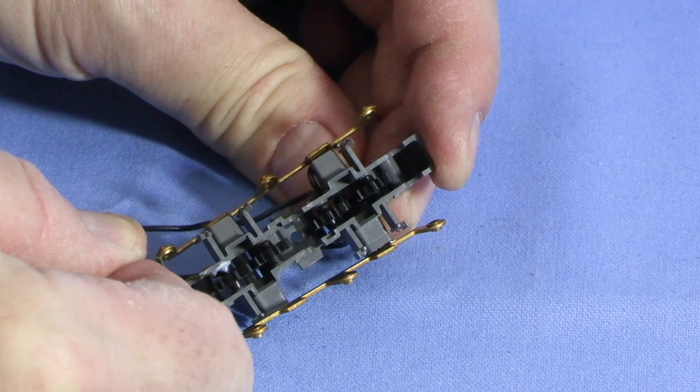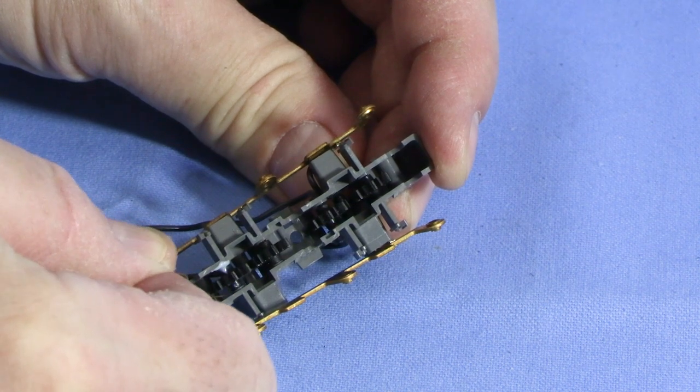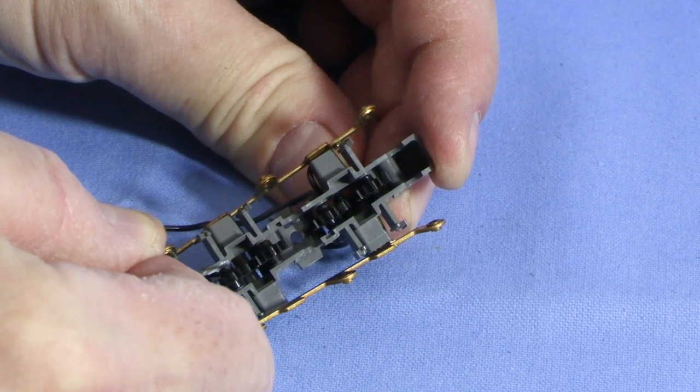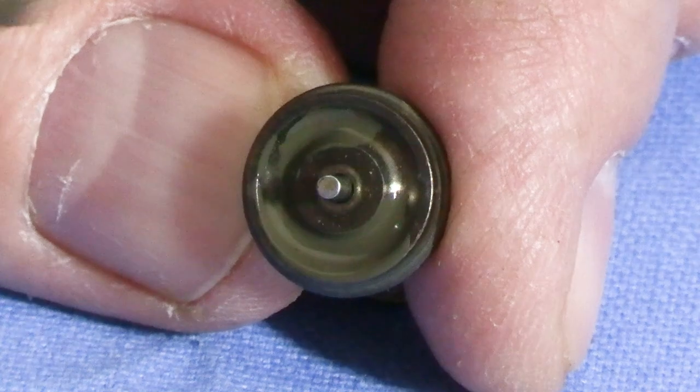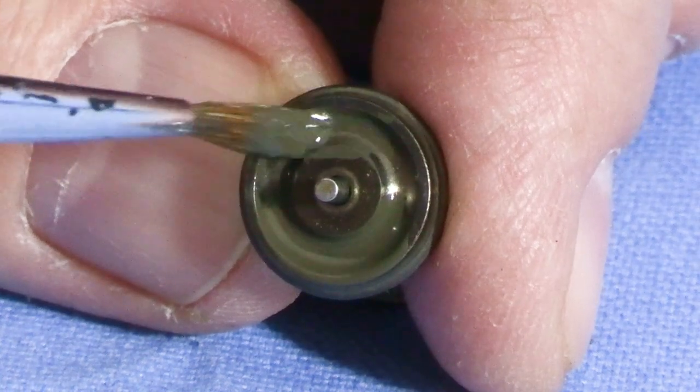Since the second gearbox also looks clean, I'm going to leave it together and lubricate it in a different way. I'm using a piece of wire to put small dabs of white grease on the ends of the gear shafts. Some of the gear shaft holes are accessible from the outside. Again, this is optional, but now is a good time to paint the wheel faces.